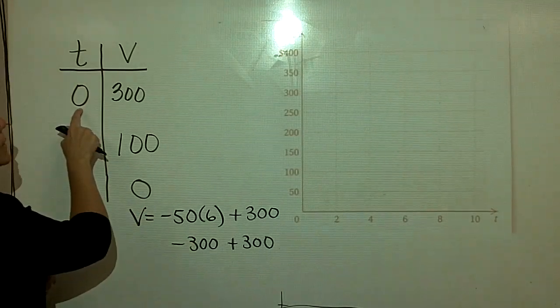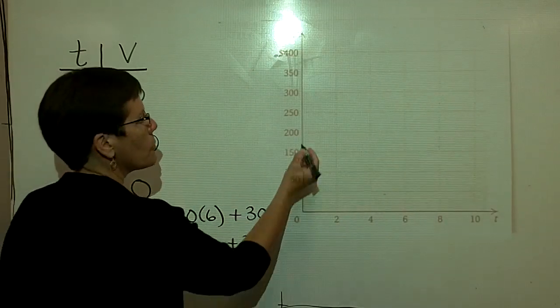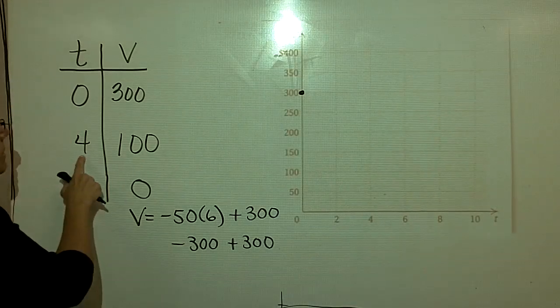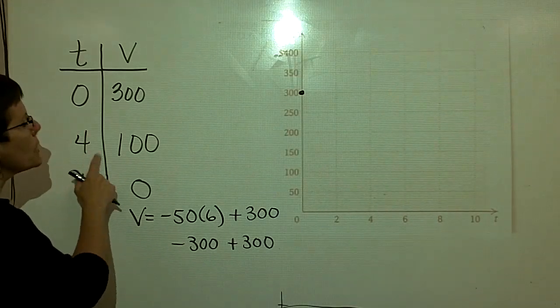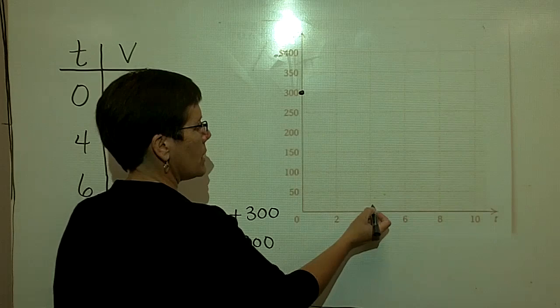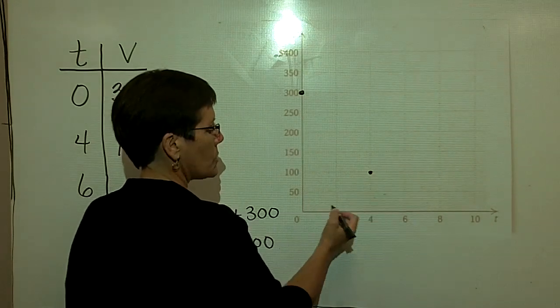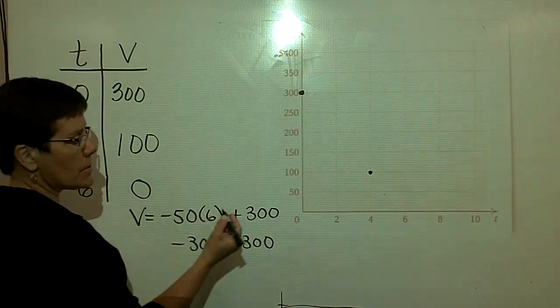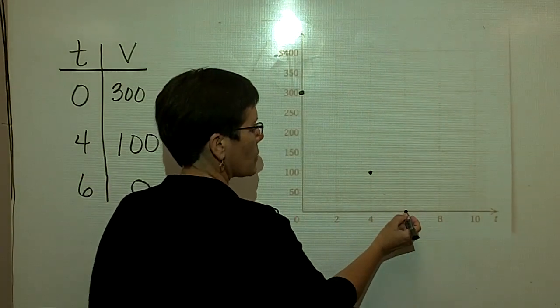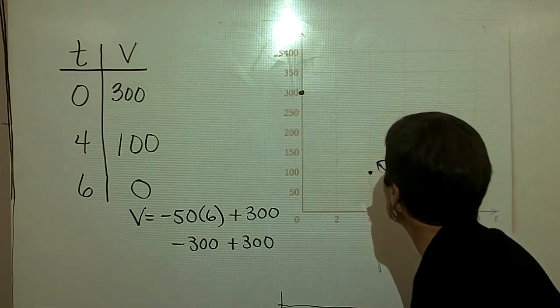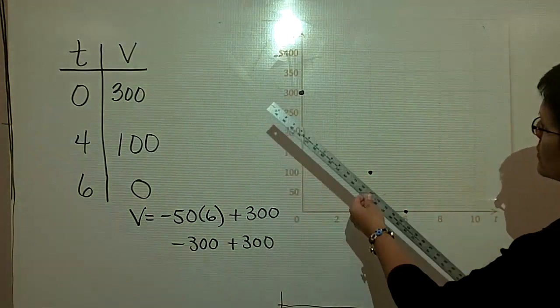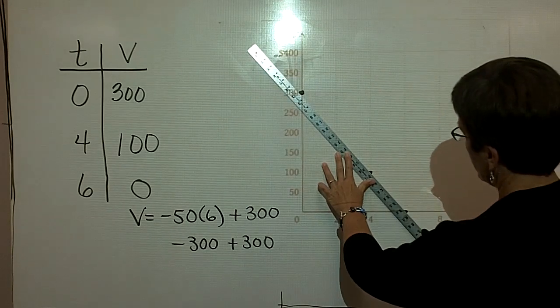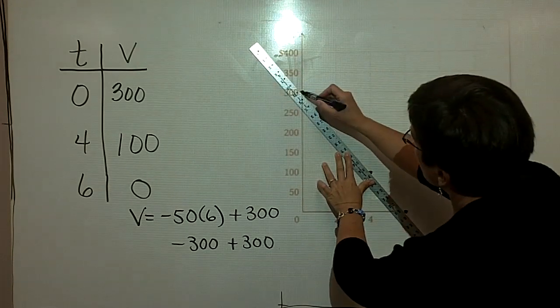So my first ordered pair is when time is zero, I bought that software for $300. So there's my first ordered pair. My second ordered pair, when time is four years, the software is worth $100. So I'll go to the right over to four and up to 100, and then when time is six years, the software is worth $0. And I'm looking to see that this is represented by a straight line, and it sure looks like it is. I'm going to draw a line through the data. I'm not going to extend down below the x-axis.